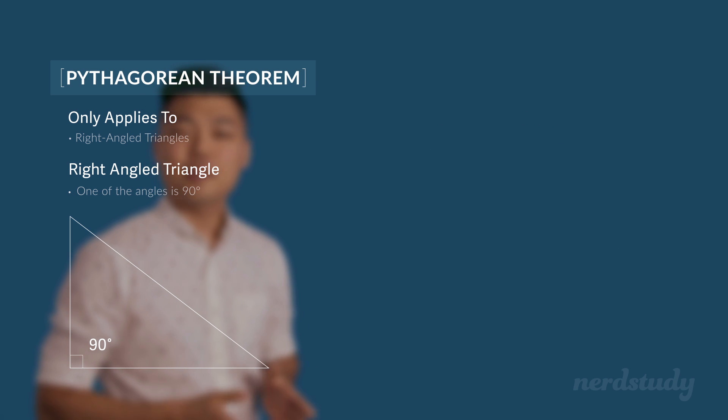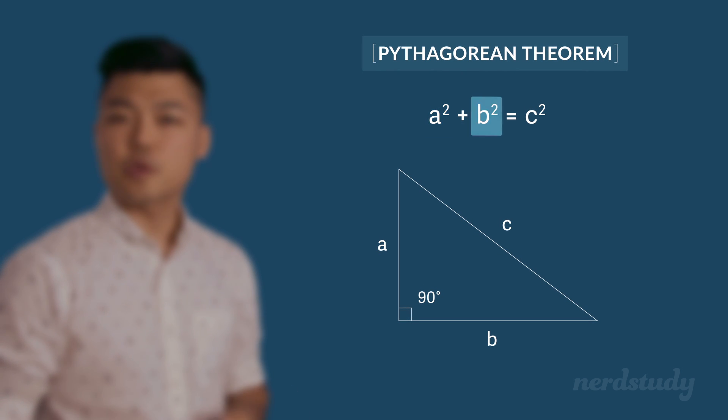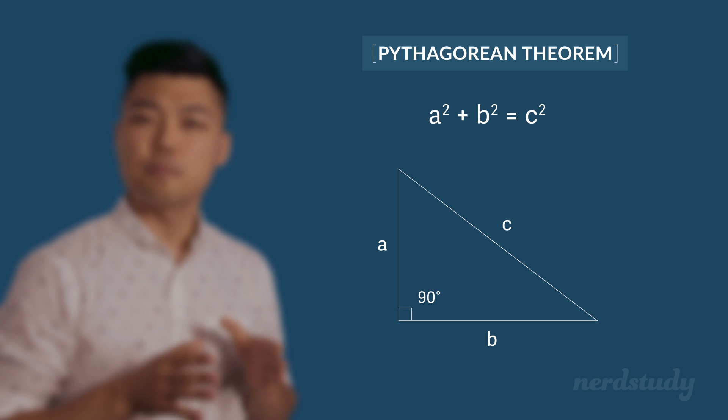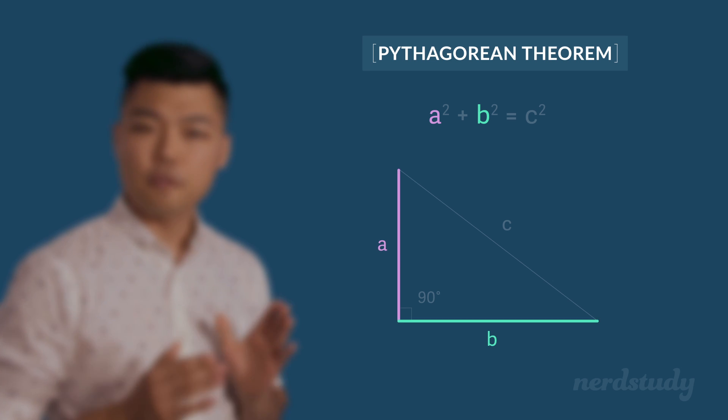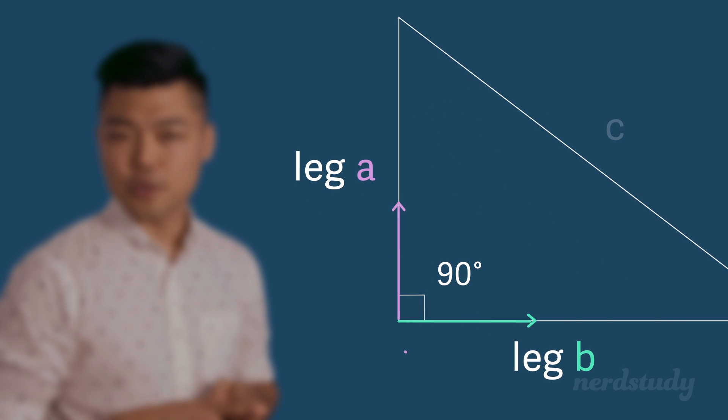And now, here's the theorem: a² + b² = c². What does this mean? Well, a and b over here refers to two side lengths of the right triangle. It's not just any of the two sides. It refers specifically to the two legs, which is just another way to say the two sides that make up the 90-degree angle.